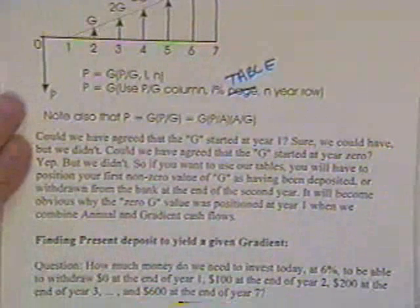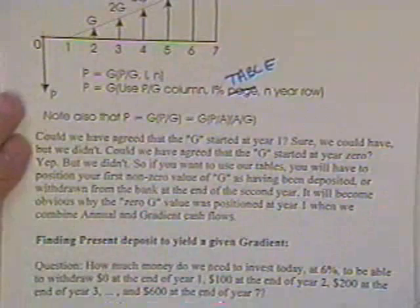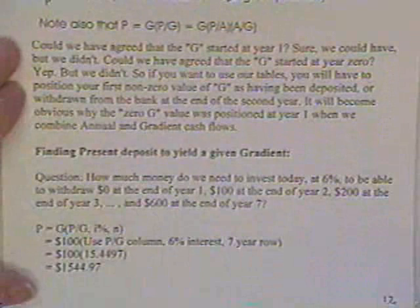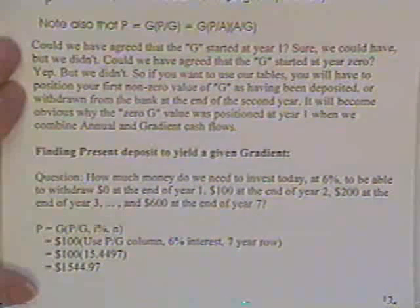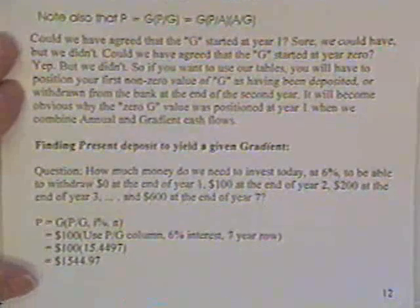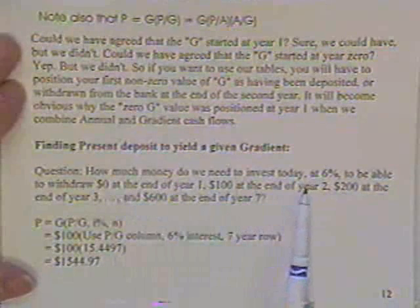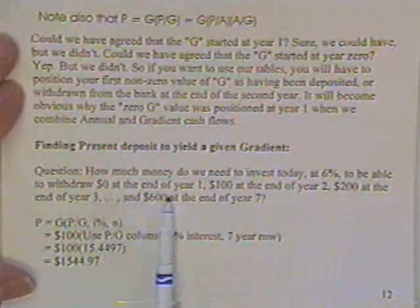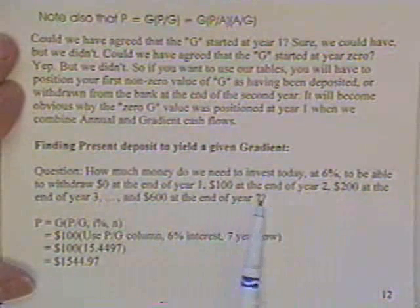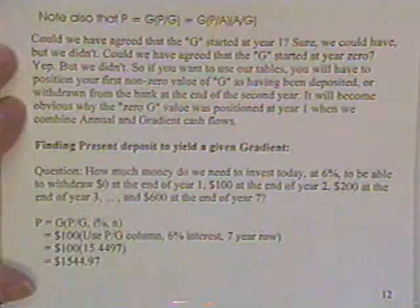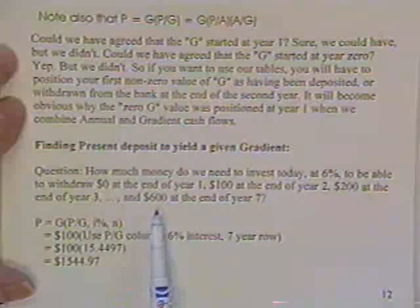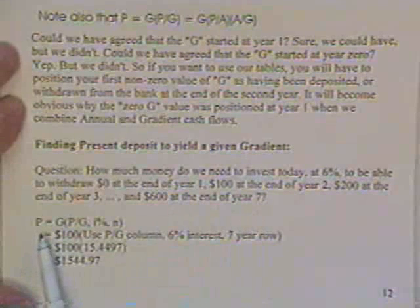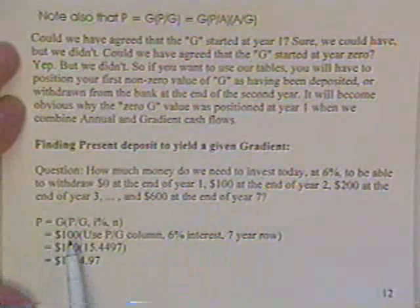Could we have agreed that G started first year? Yeah, we've already discussed that. All right, finding the present deposit necessary to yield a given gradient. Question, how much money do I need to invest today at 6% so that you could withdraw no money at the end of year 1, $100 at the end of year 2, $200 at the end of year 3, and so on. That will be a gradient problem. The gradient is $100.